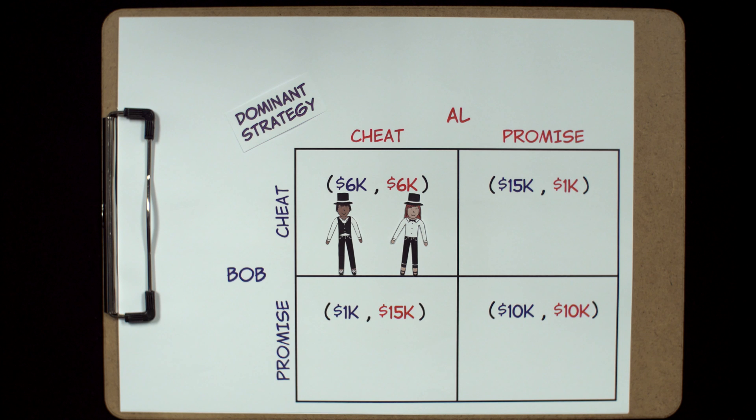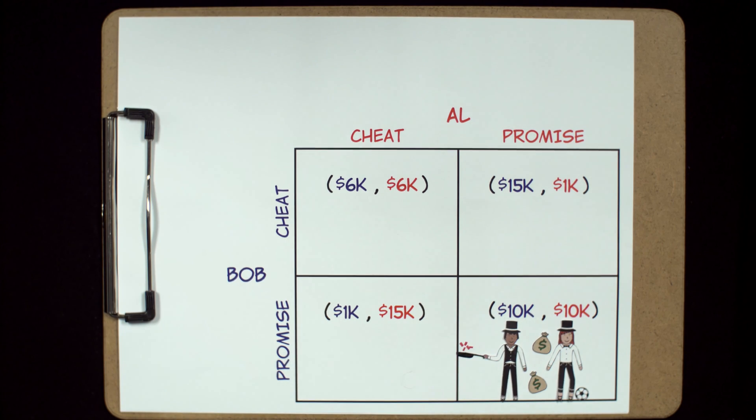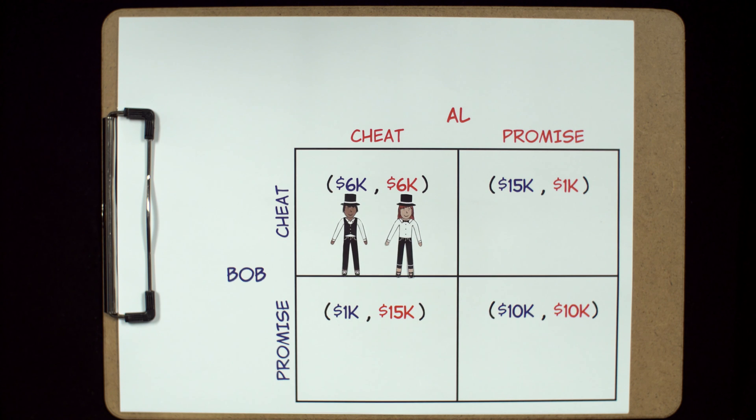Notice that this isn't an optimal outcome. It would be so much better for them to each perform only one show per week. They'd earn a lot more money and they'd also have a lot more free time on their hands. But if we're just evaluating what to do from the payoffs listed in our matrix, it is in both Bob's best interest and Al's best interest to cheat.